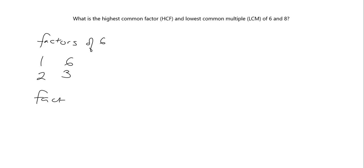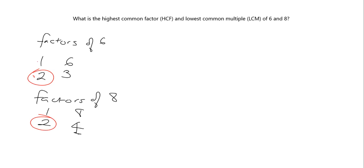What are the factors of eight? One goes into eight and its partner factor is eight, two goes in and its partner factor is four, three doesn't go in, four goes in — but we've already got that so we can stop. I've got all the factors of six over here and all the factors of eight over here. The factors in common that they both have are one and two, and the biggest of those is obviously two. So the highest common factor of six and eight is two.